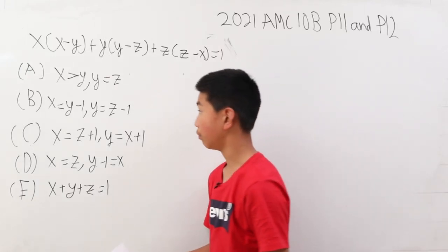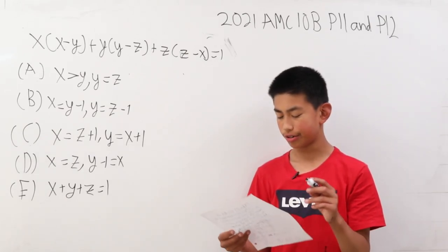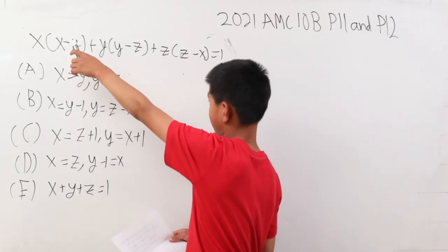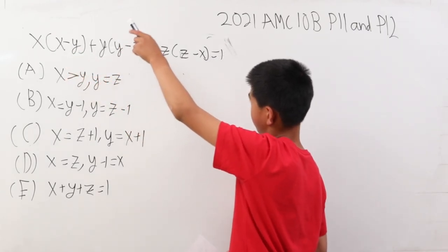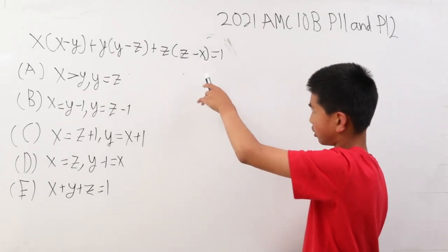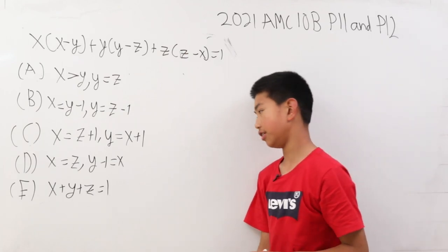Okay, moving on to problem 12. Which of the following conditions is sufficient to guarantee that integers x, y, and z satisfy the equation x times x minus y plus y times y minus z plus z times z minus x equals 1? We have all our answer choices listed out here.